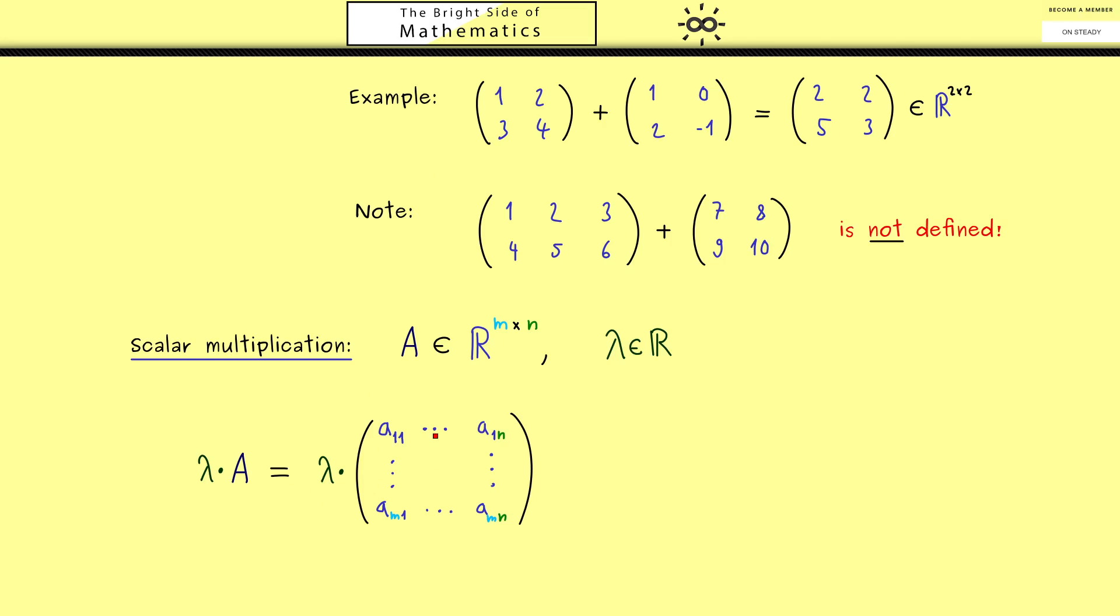So again as before you see this dot here is a new operation. Indeed in the same way as above the definition is very natural, we just define it entry-wise. More precisely this means in each entry we just use the normal multiplication of real numbers. So we simply multiply lambda with the entry a_ij.